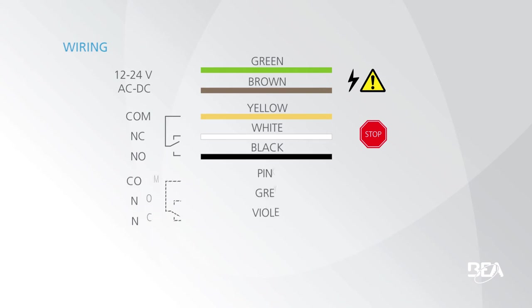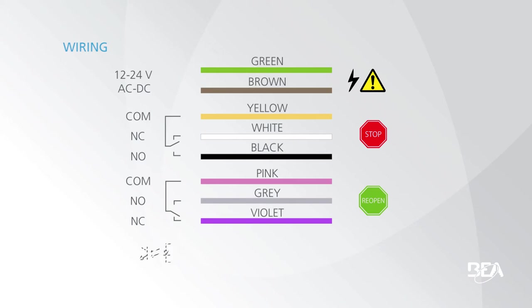Connect pink and grey or violet to the reopen command of the door. Connect red and blue to the test terminal of the door controller. Polarity is important. Connect the red wire to the positive pole and the blue wire to the negative pole.